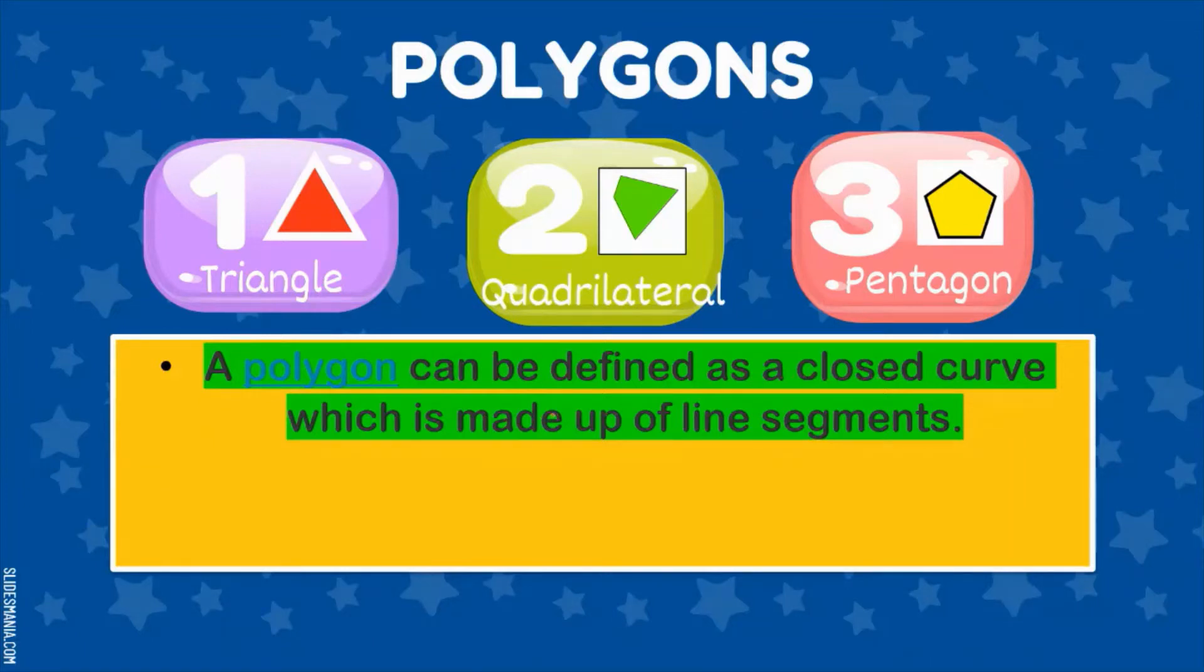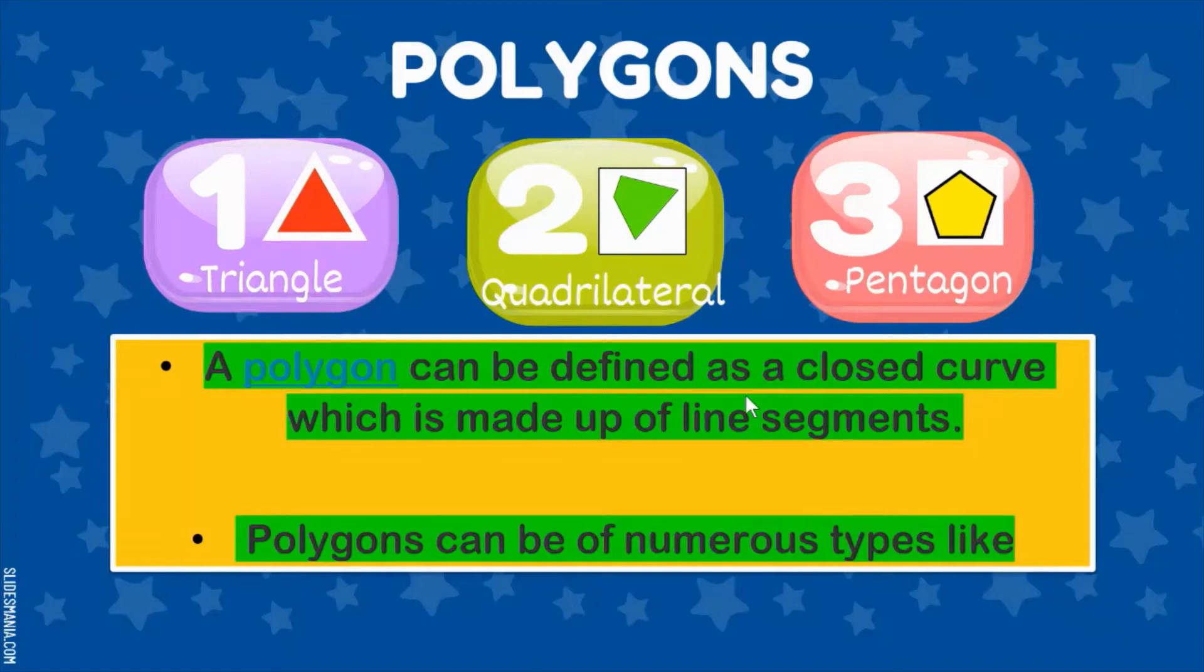A polygon can be defined as a closed curve which is made up of line segments, and there are numerous types of polygons. Like you have a triangle here, this is a polygon, then you have a quadrilateral and pentagon, and so on.